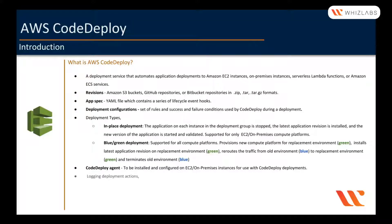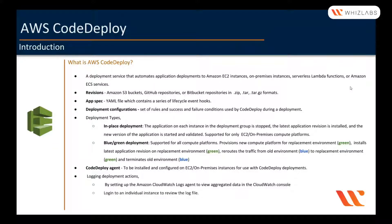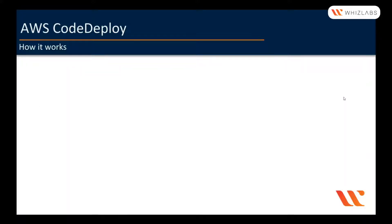For logging deployment actions, you can either set up the Amazon CloudWatch Logs agent to view aggregated data in the CloudWatch console, or you can log into an individual instance to review the log files. Similar to CodeBuild, we can perform actions on CodeDeploy using the console, CLI, SDKs, or trigger as part of AWS CodePipeline.